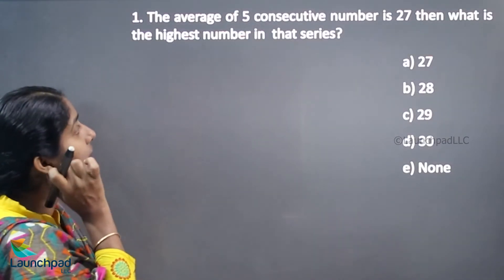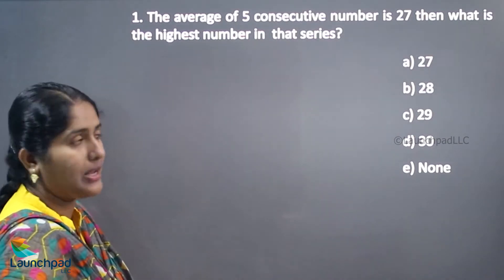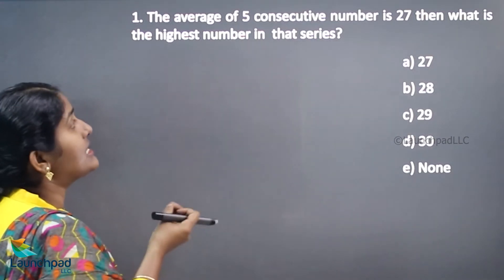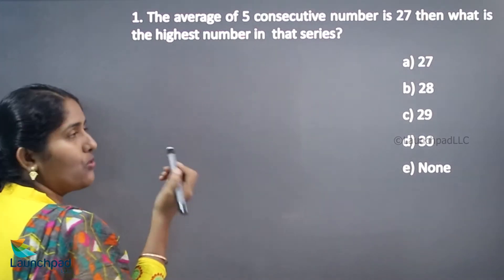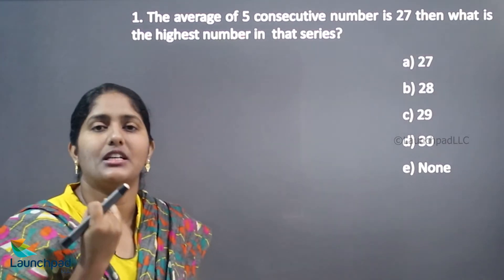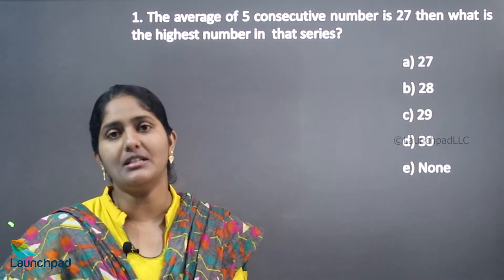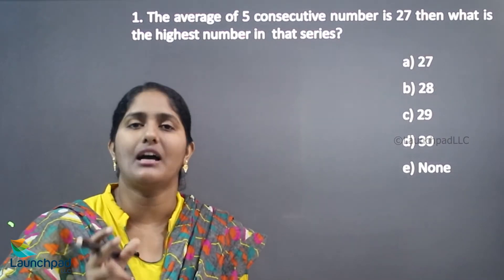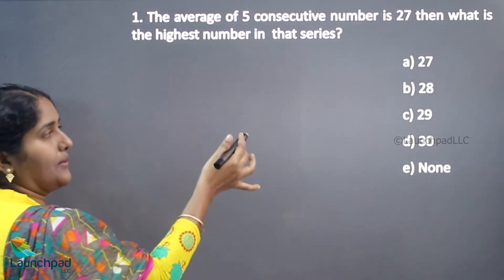Hello everyone. In this video we are going to see the next type of average concept. The question is: the average of five consecutive numbers is 27. For consecutive numbers, consecutive even numbers, and consecutive odd numbers, the average is always the middle term.